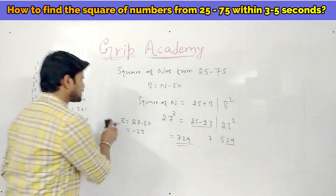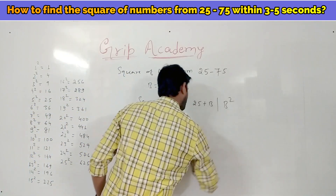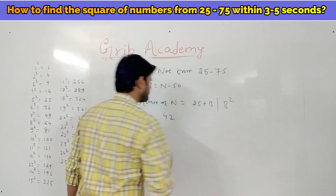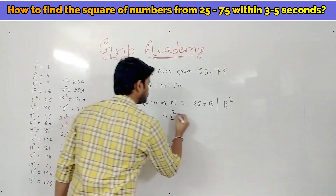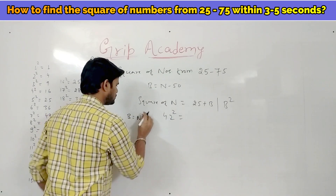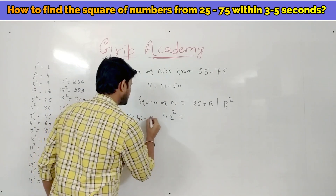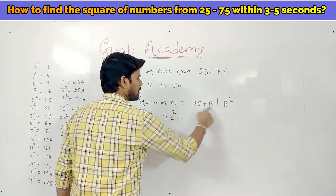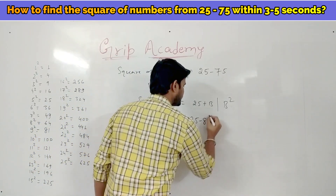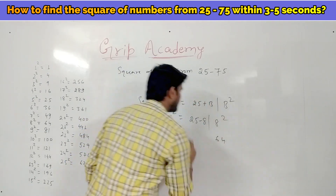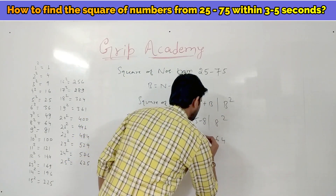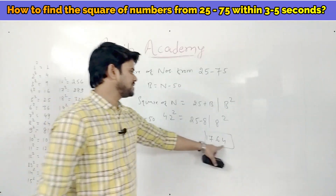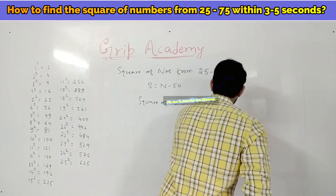Let's take another example. Consider we have to find the square of 42. Base is n minus 50, that is 42 minus 50 equals minus 8. According to the formula: 25 minus 8, slash 8 squared. 8 squared is 64. So 42² is 1764.